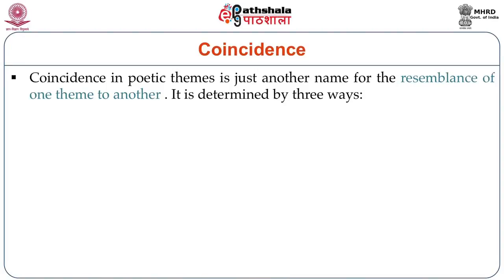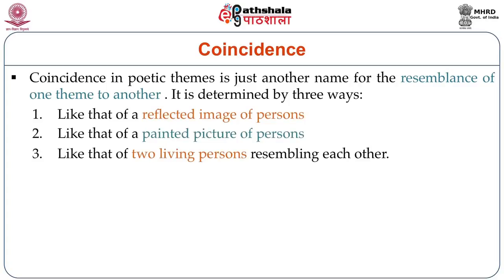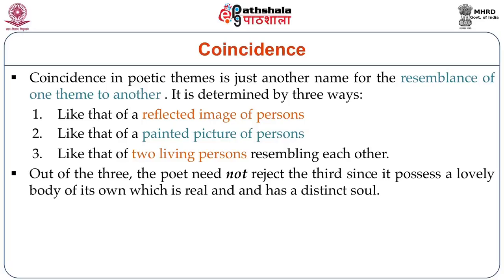From the day Adikavi Valmiki wrote the Ramayana and Mahabharata was written, the stories have been repeatedly written by many poets. The poetic theme is the Ramayana's story, but it has been described by different people in different ways. This coincidence in poetic themes is just another name for the resemblance of one theme to the other. It is determined by three ways: like the reflected image of persons, like the painted picture of persons, and like two living persons resembling each other. The poet needs to reject the third since it possesses a lovely body of its own, which is real and has a distinct soul.